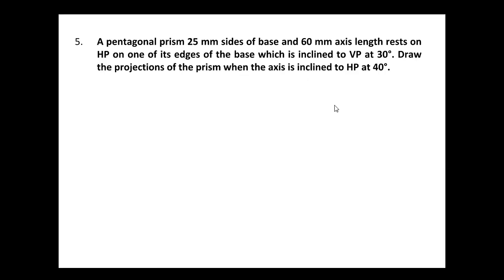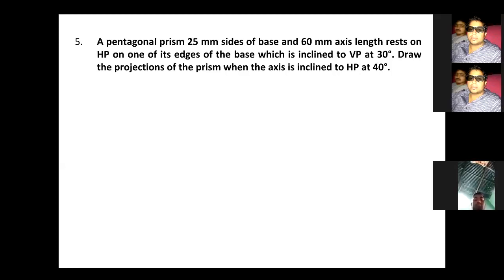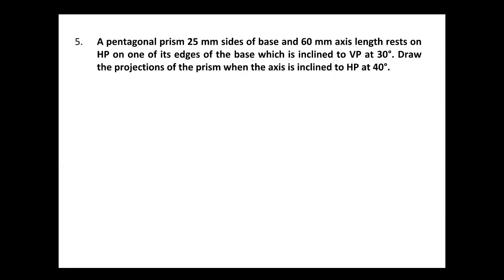A pentagonal prism with 25mm sides of base and 60mm axis length rests on HP on one of its edges of the base, which is inclined to VP at 30 degrees. Draw the projections of the prism when the axis is inclined to HP at 40 degrees. It is resting on HP on one of the edges of the base, so I should have an edge of the base of the pentagon of 25mm to my right-hand side.